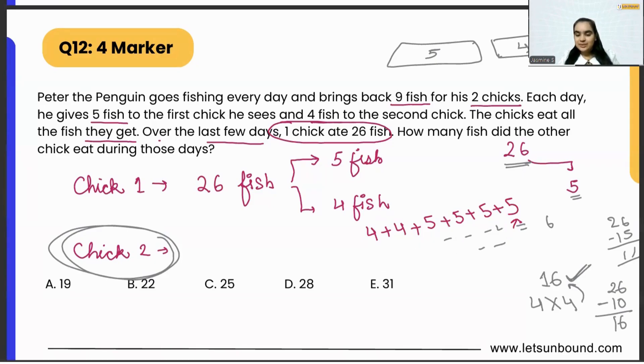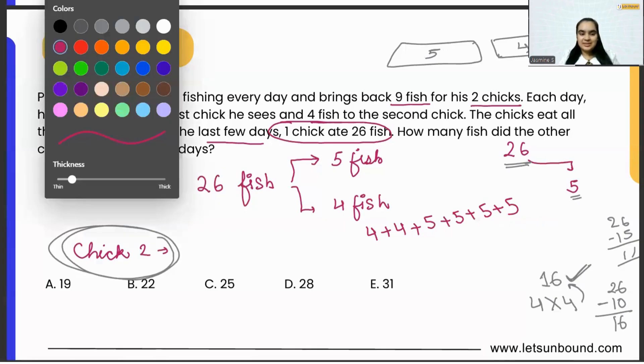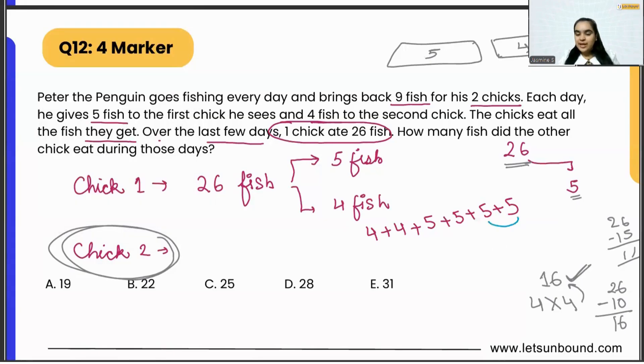Let's do it. Let's start with the easiest thing. We know that skip counting of fives is super easy. Five plus five is ten, ten plus five is fifteen, fifteen plus five is twenty, twenty plus four is twenty-four, and twenty-four plus four is twenty-eight. That means Chick 2 ate 28 fish. That is our answer.